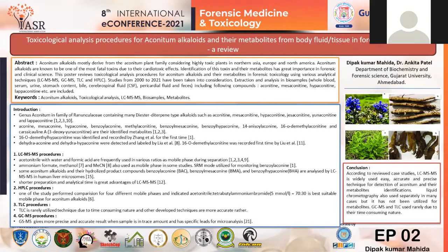There are many different kinds of biological samples used for extraction of these alkaloids, such as blood, serum, urine, stomach content, bile, cerebrospinal fluid, pericardial fluid, and feces. Mainly LC-MS, HPLC, and TLC, and GC-MS are used for analysis.